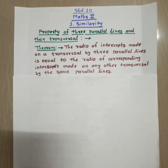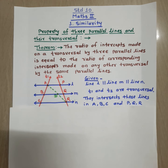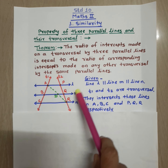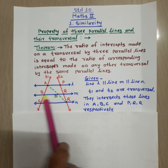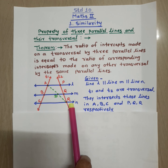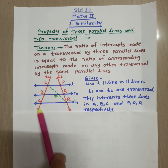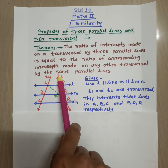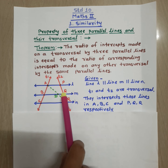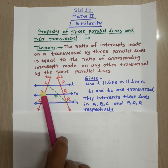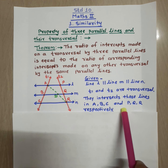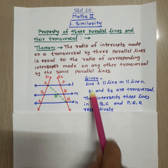Consider the figure of 3 parallel lines: line L is parallel to line M is parallel to line N. There are two transversals T1 and T2. They intersect these lines at points A, B, C and points P, Q, R respectively. This is our given information.